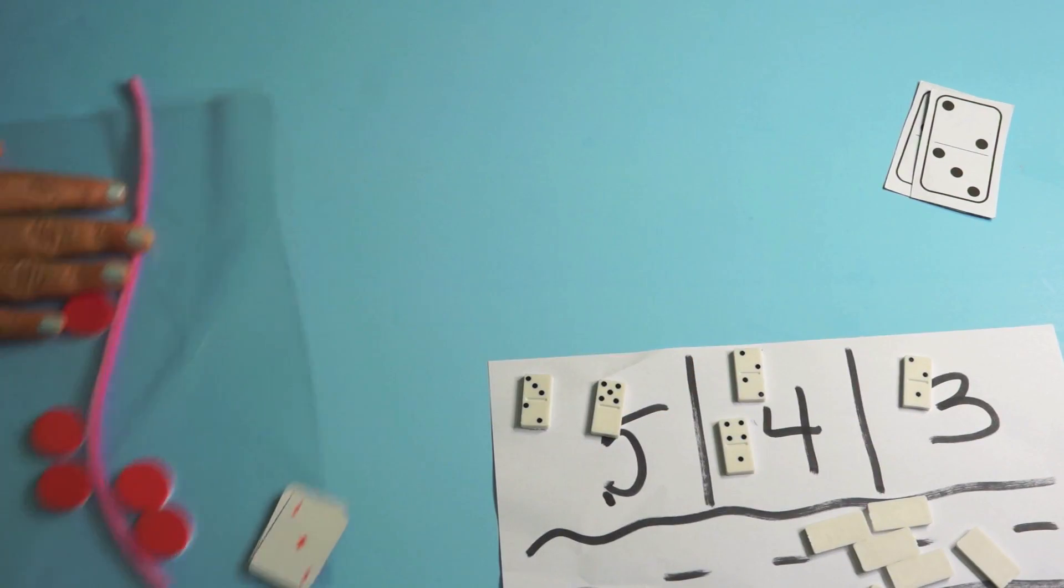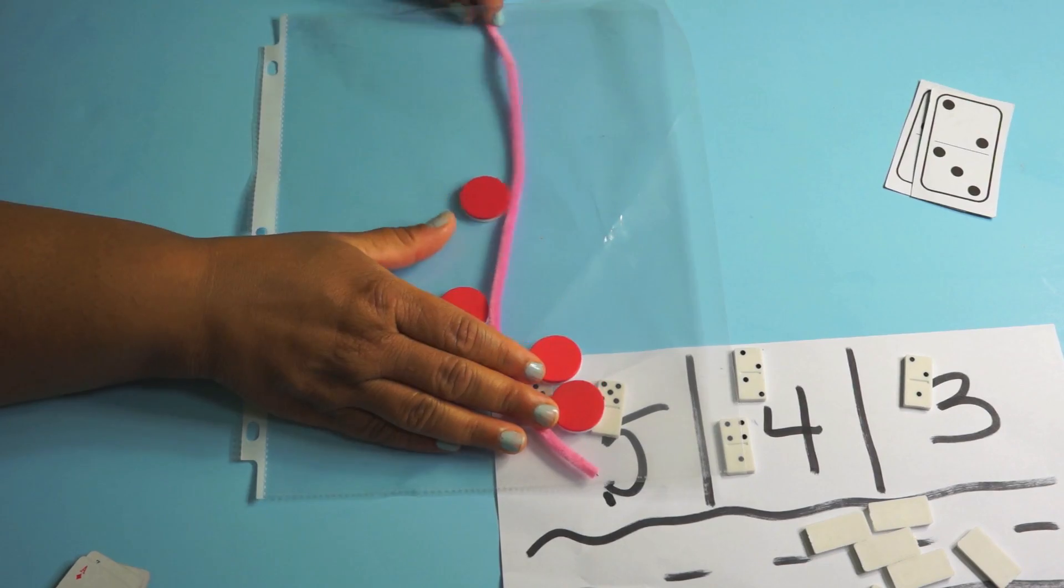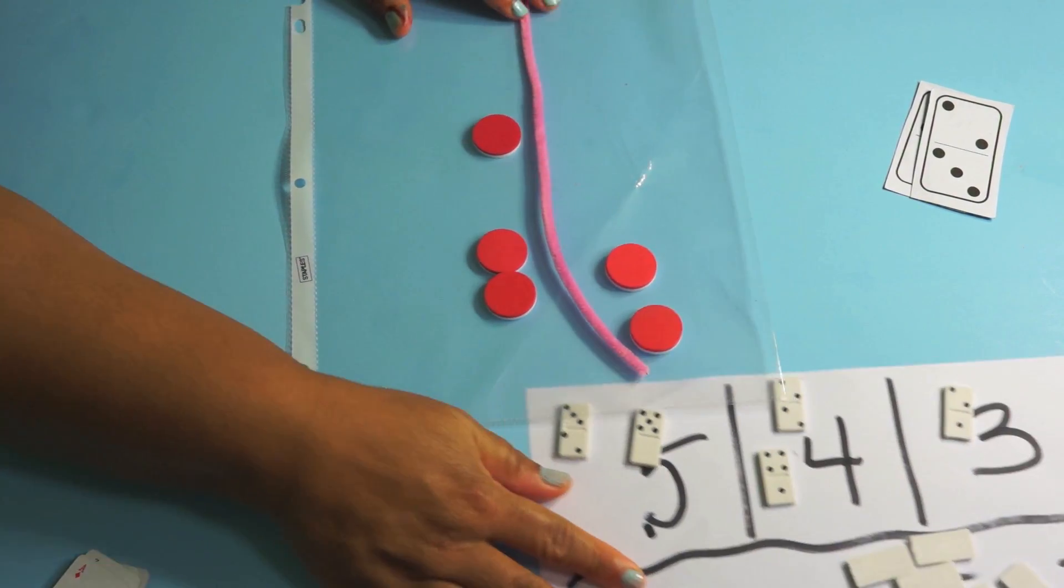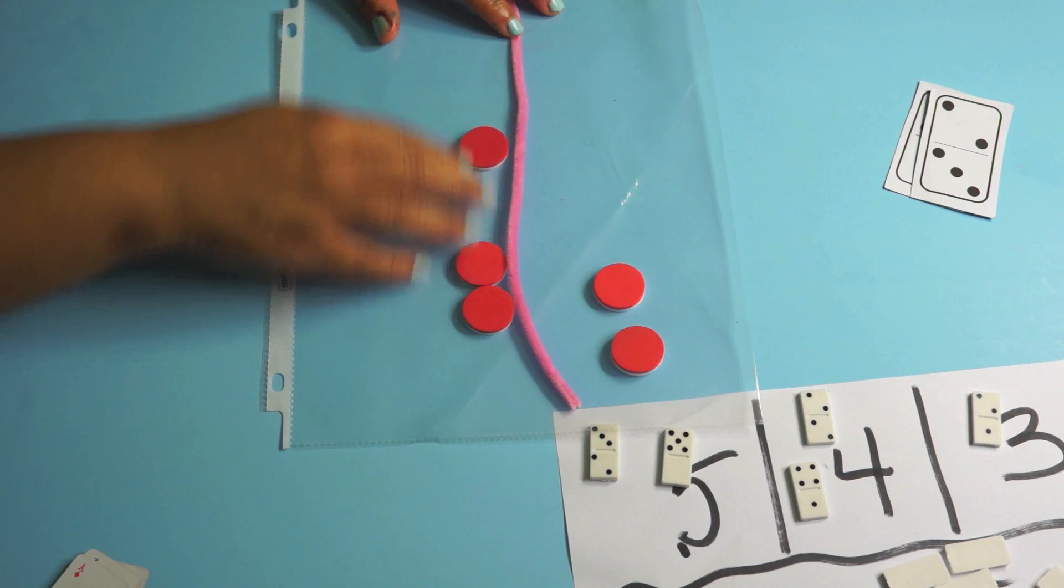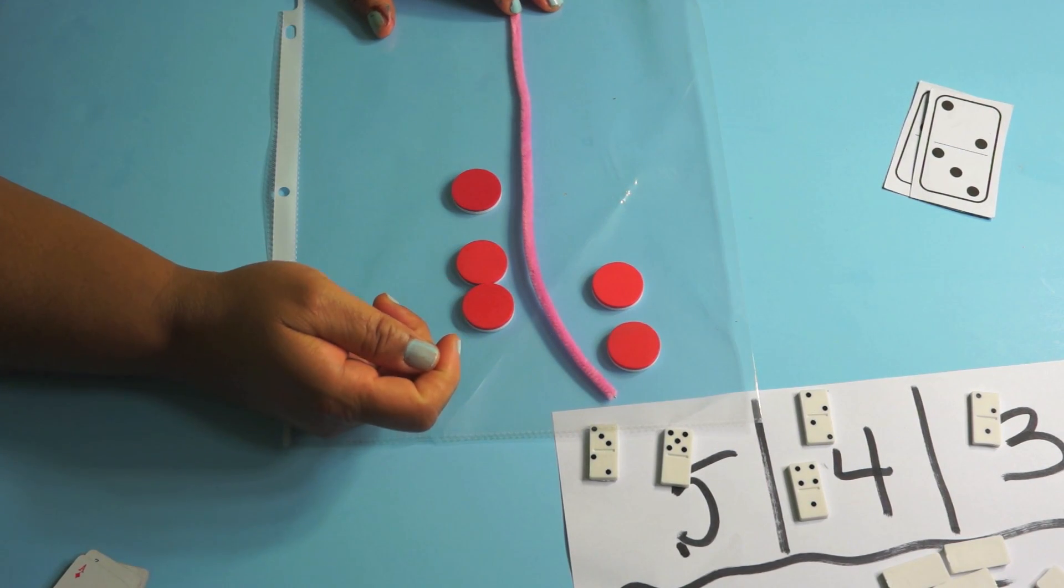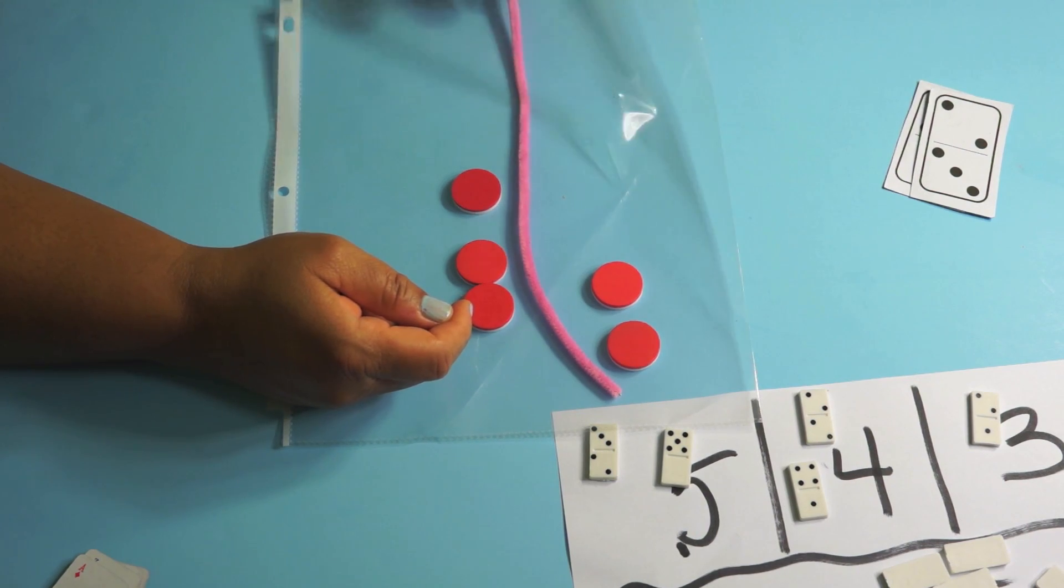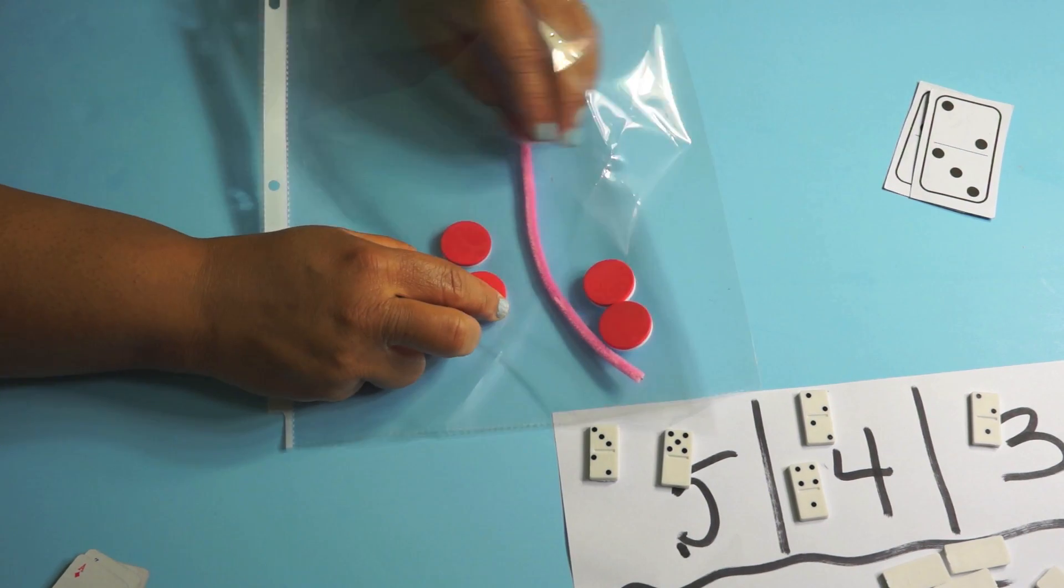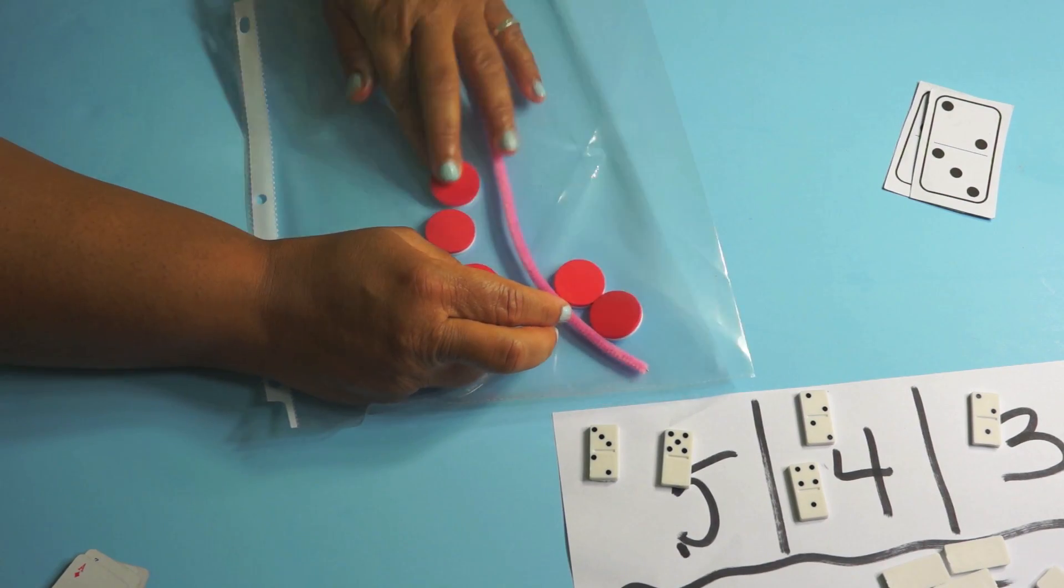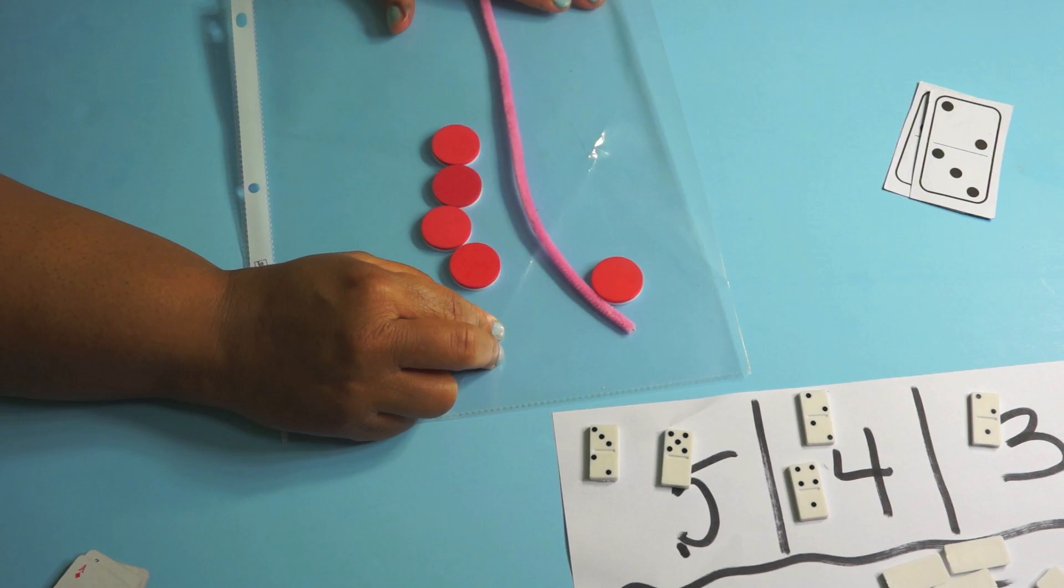Now, the next thing I do is I love this. I just take a sheet protector and put a pipe cleaner in it. And then we work with counters. And I say, oh, show me five with two plus three or I say, show me five with three plus two, two plus three or with three plus two or show me five with four plus one.